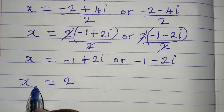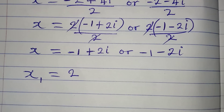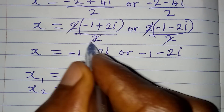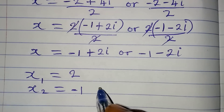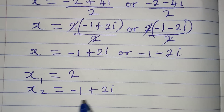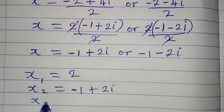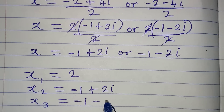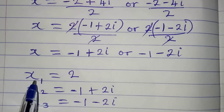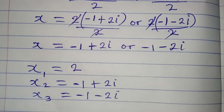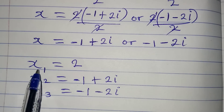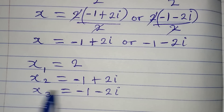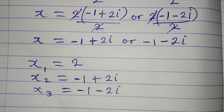So the three solutions are: x₁ equals 2, x₂ equals minus 1 plus 2i, and x₃ equals minus 1 minus 2i. The only real solution is x equals 2; the other two are complex (not real). Thank you for watching.